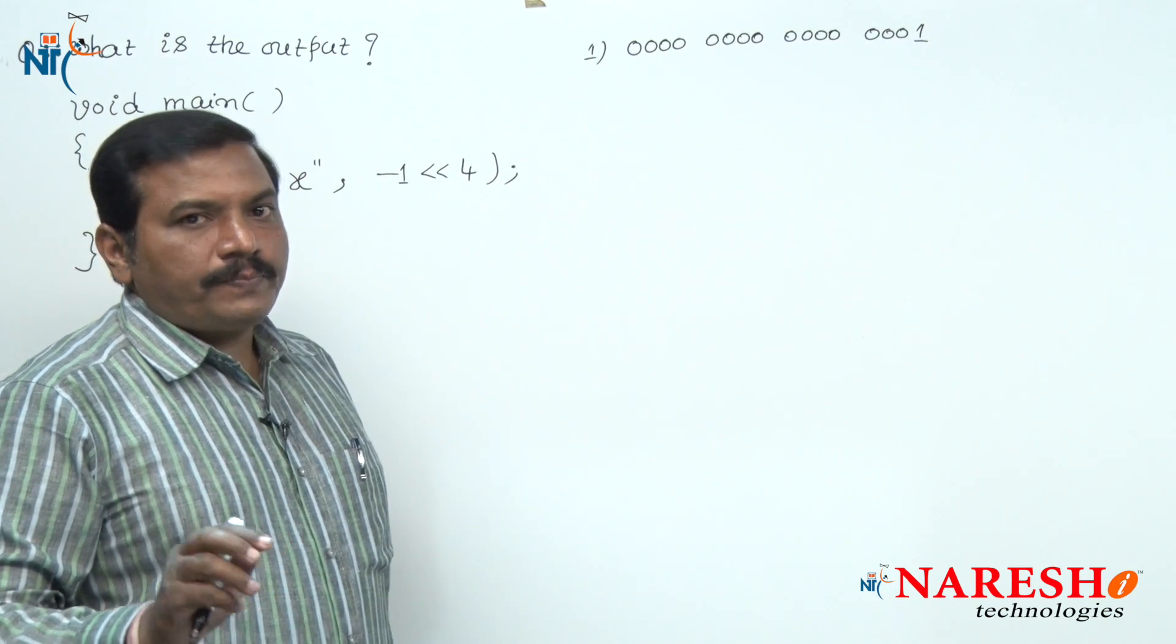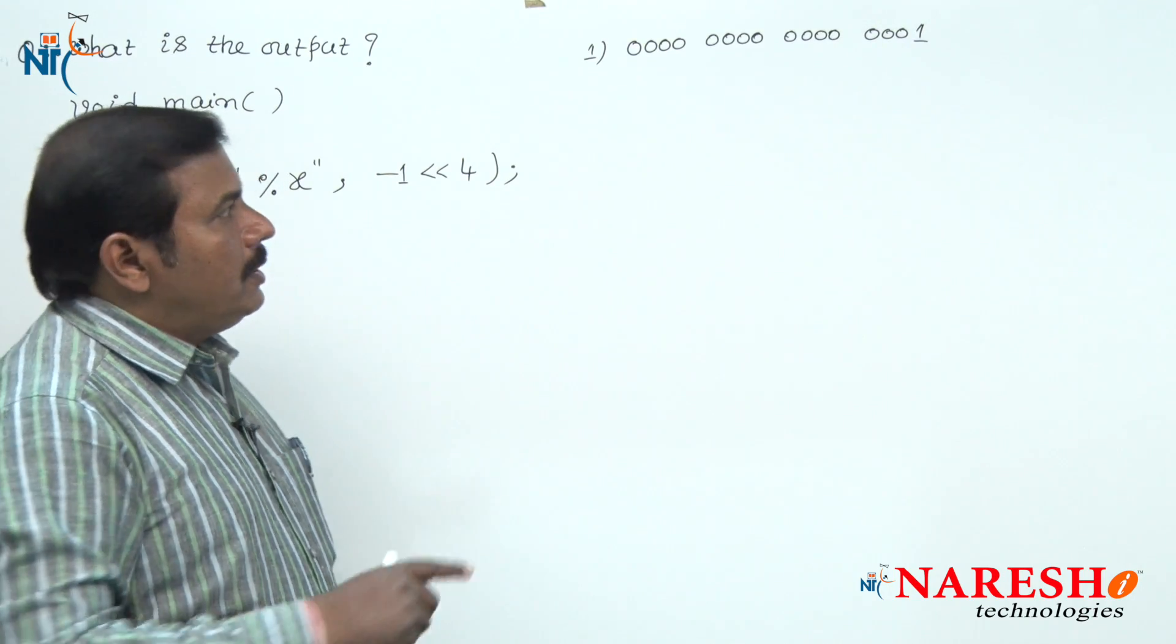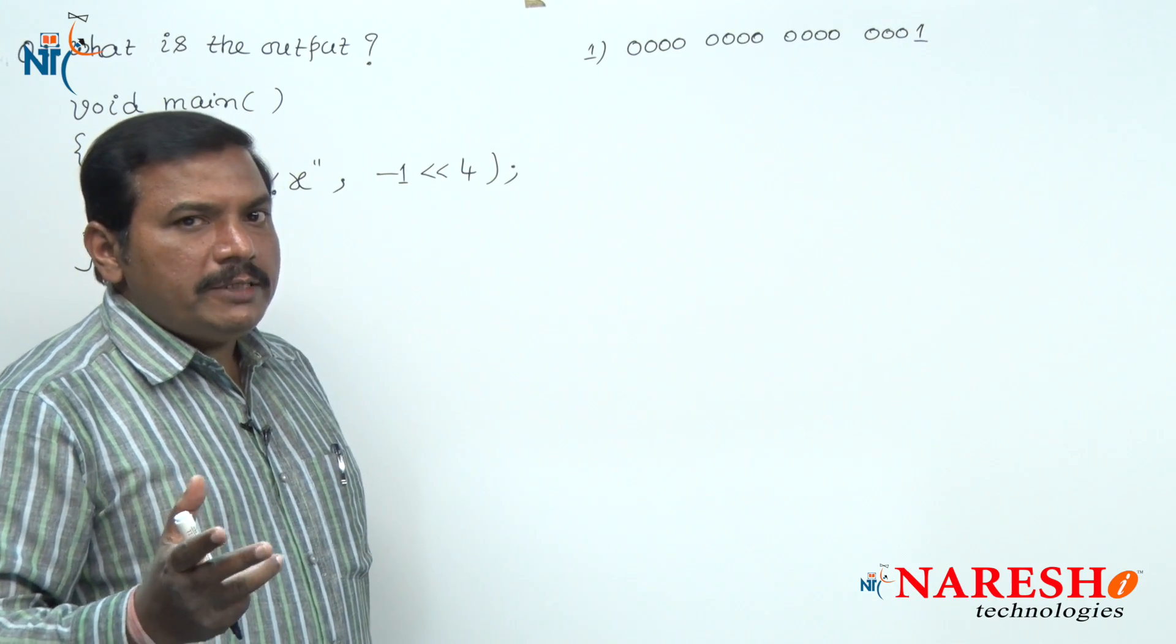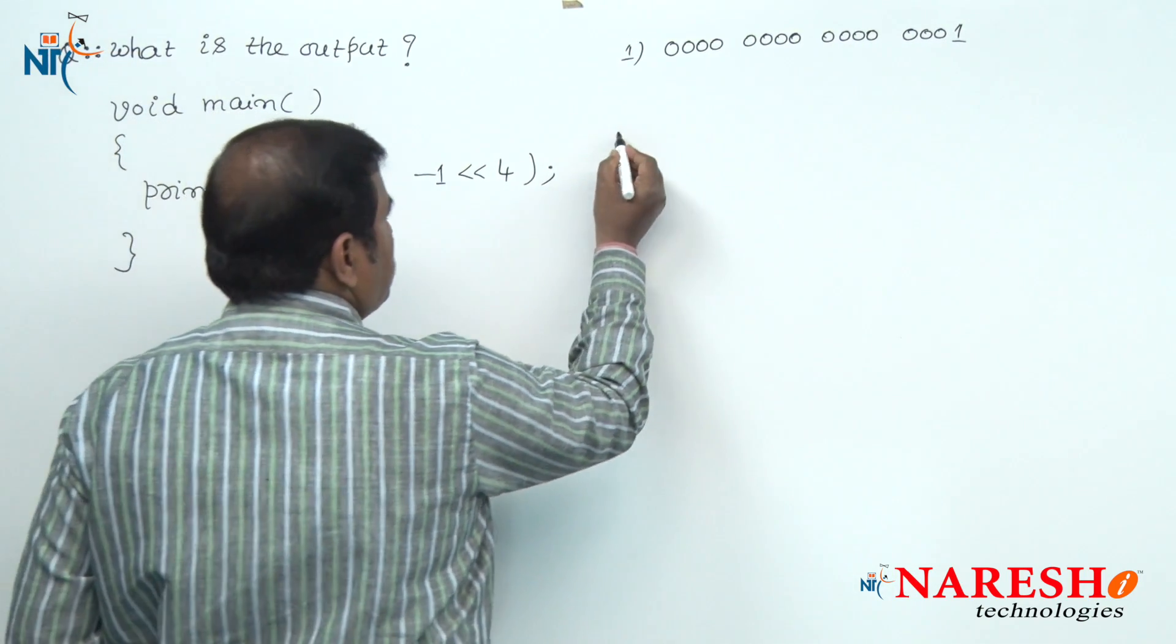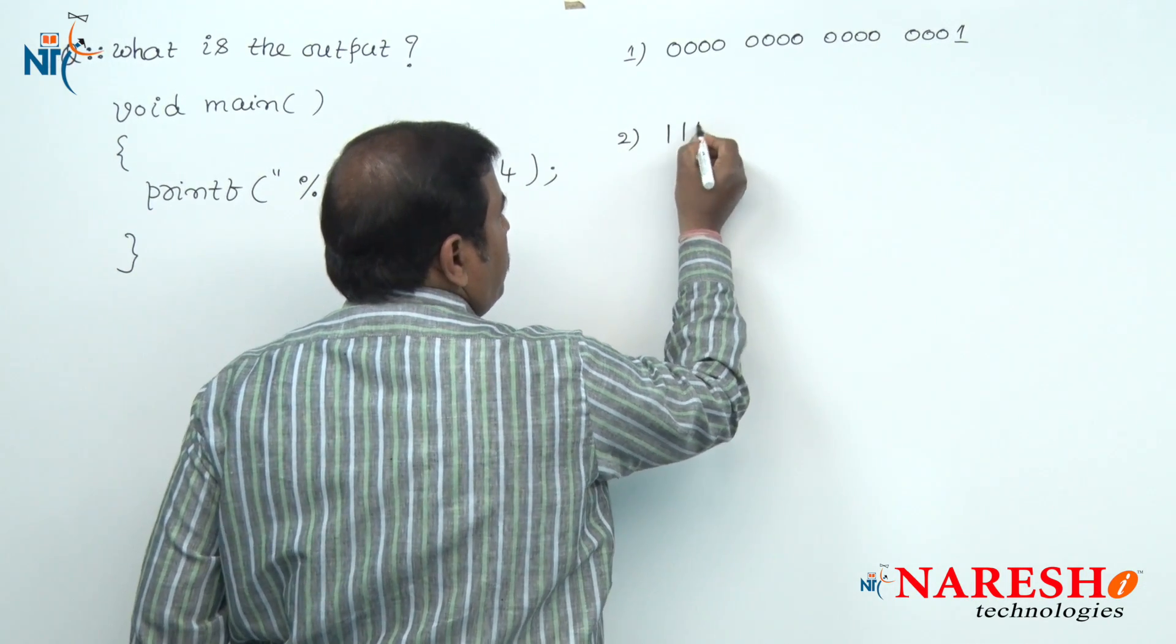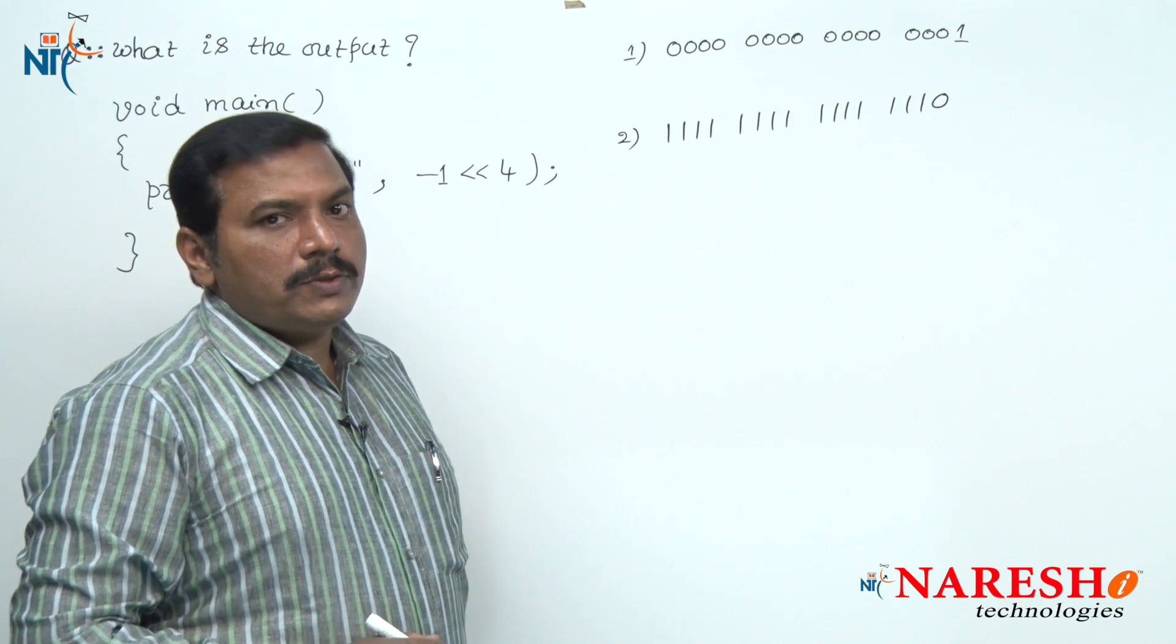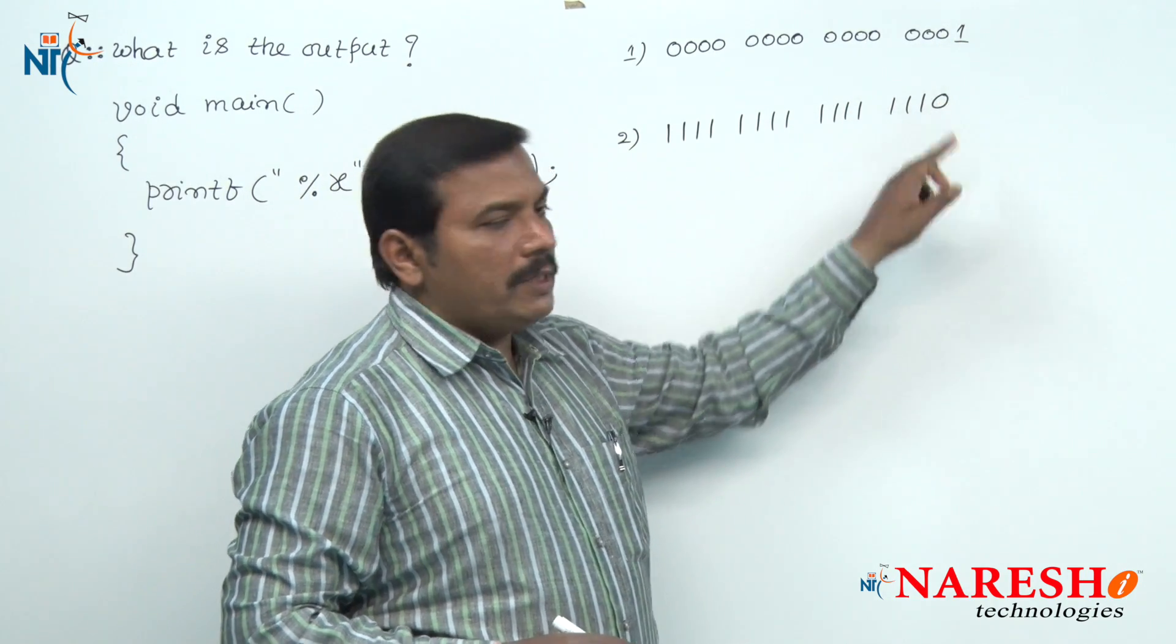Here we are assuming that 2 bytes is the memory allocated to an integer data. That is the reason I represented 16 bit binary code of 1. 2 bytes is 16 bits, hence this is the 16 bit binary code of 1. Step number 2: evaluate the 1's complement of this 16 bit binary code. In 1's complement all 0's are converted into 1's and 1's are converted into 0's. All 15 zeros become 15 ones and bit 1 converted as 0.